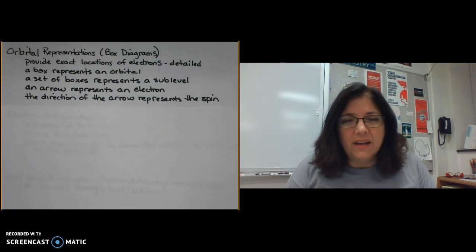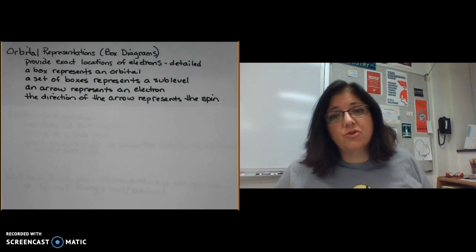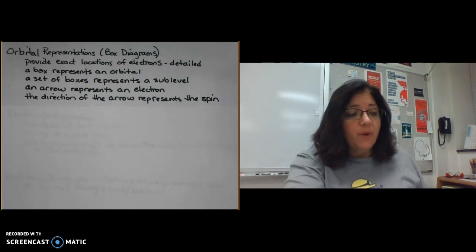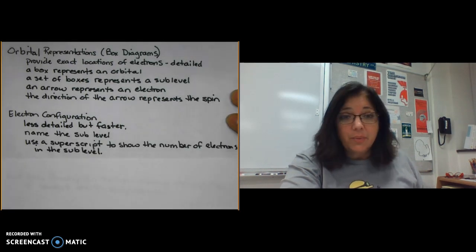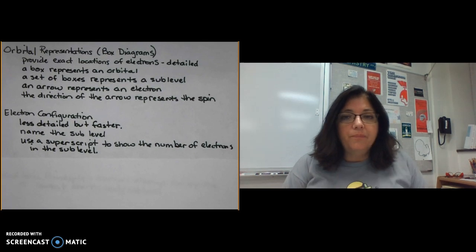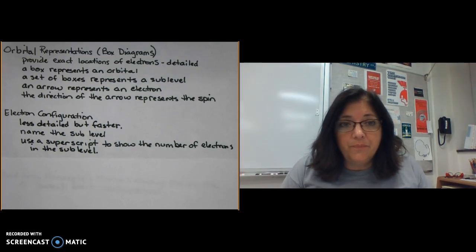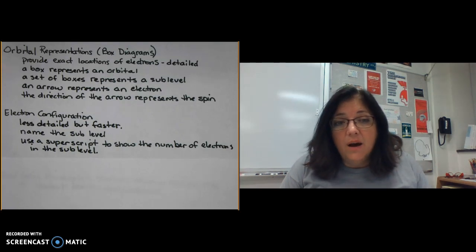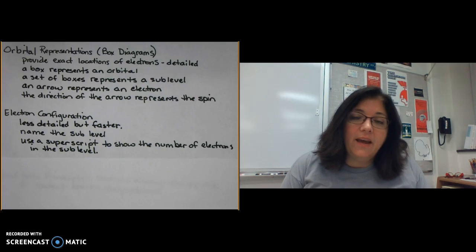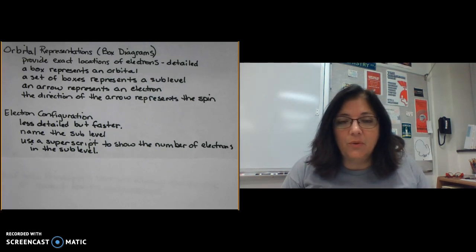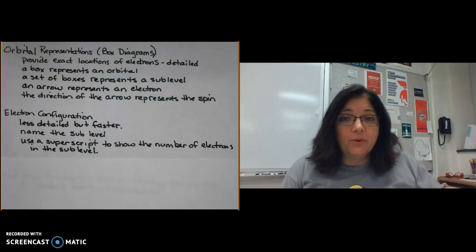Electron configurations are faster but less detailed. To write an electron configuration, you write the name of the sublevel and then use a superscript — like an exponent — to show the number of electrons in that sublevel. You don't get to see individual orbitals, spins, or individual arrows, so it's less detailed but more convenient when you just want to quickly think about the electron arrangement.